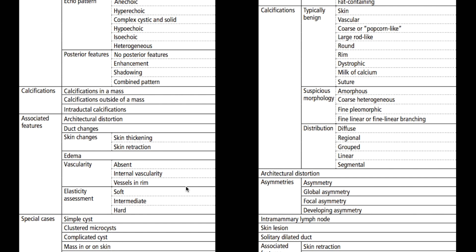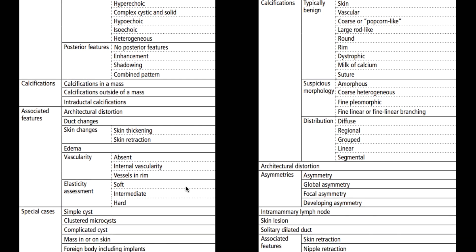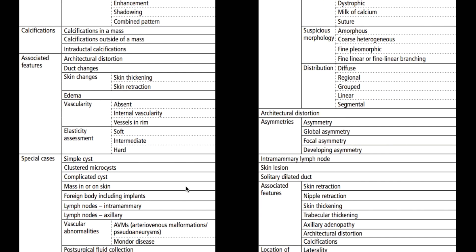When calcifications are seen on ultrasound — though not optimally — we also describe them using the BI-RADS lexicon. Associated features may be included in an ultrasound report. Special cases include clustered microcysts and lymph nodes, where we look for a hypoechoic cortex, a hyperechoic hilum, and vascularity within the hilum of the lymph node.